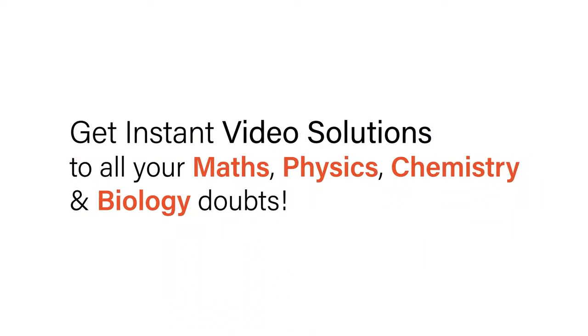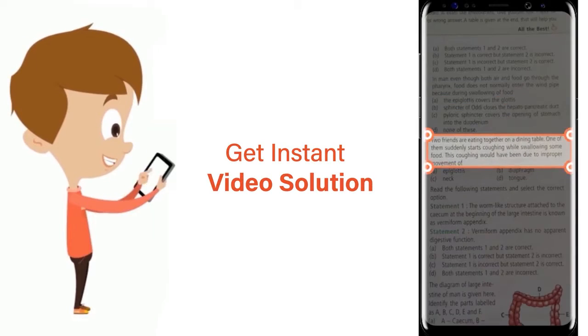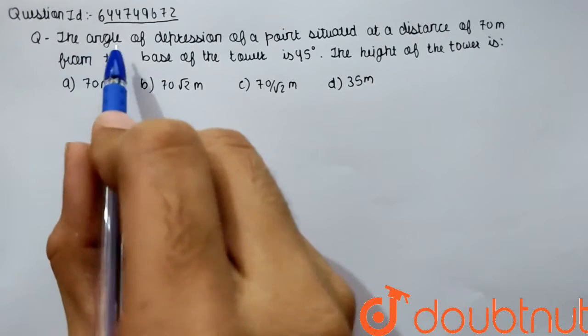With Doubtnut, get instant video solutions to all your math, physics, chemistry, and biology doubts. Just click the image of the question, crop the question, and get instant video solution. Download Doubtnut app today. The given question is: the angle of depression of a point situated at a distance of 70 meters from the base of the tower is 45 degrees.